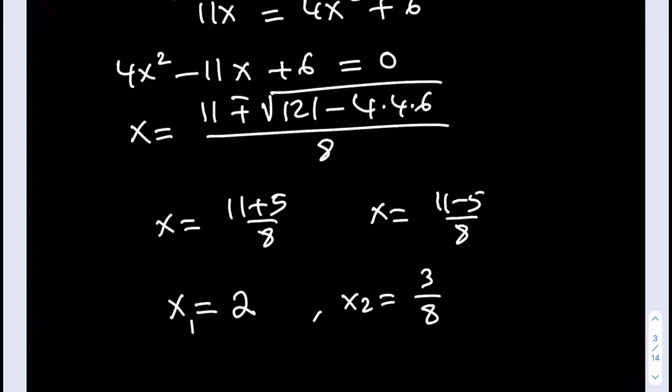And my x2 is going to be... I'm sorry, it's not 3 over 8. It's 6 over 8. My bad. Let's go ahead and fix that. So it should be 6 over 8, which is equal to 3 over 4. So those are my solutions.